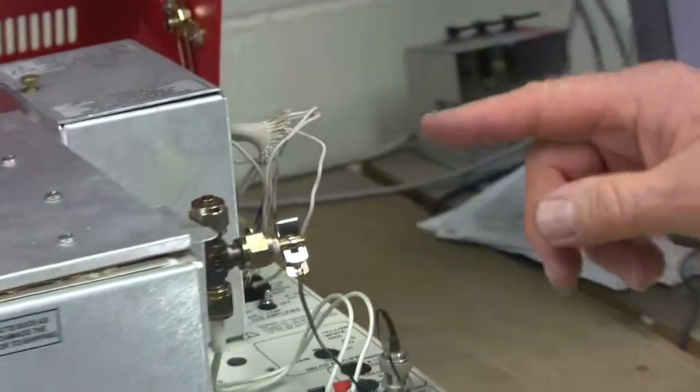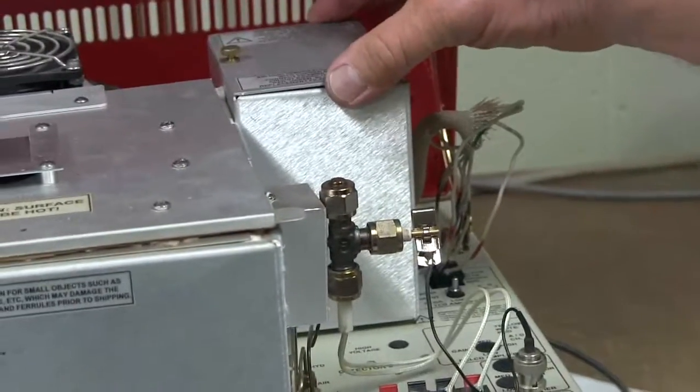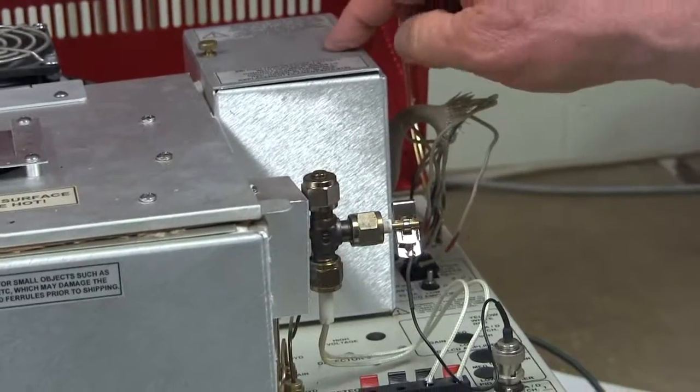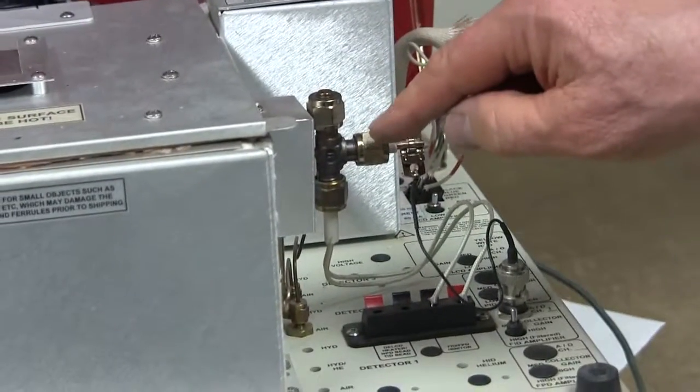This GC here has two detectors. It has a thermal conductivity detector, which is in this box, and a flame ionization detector.